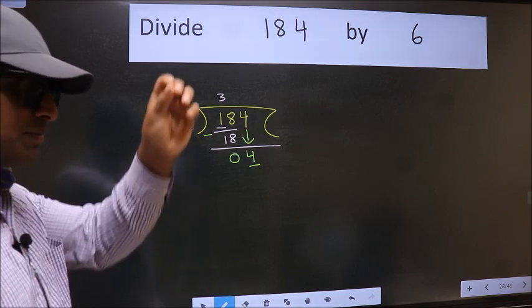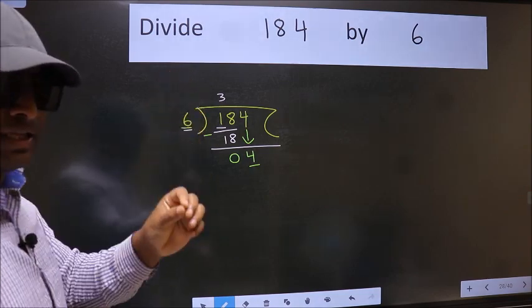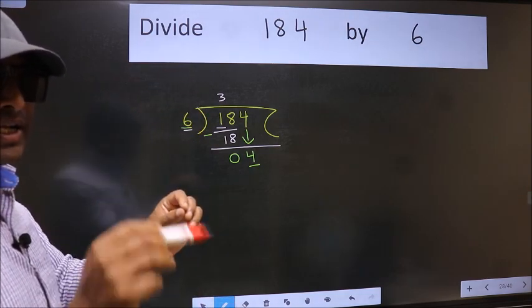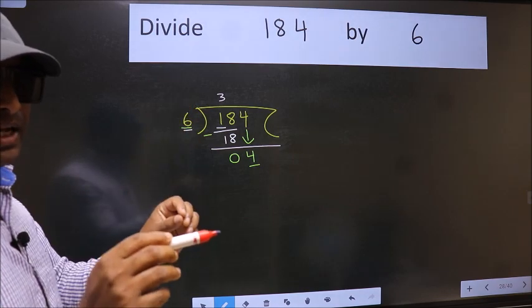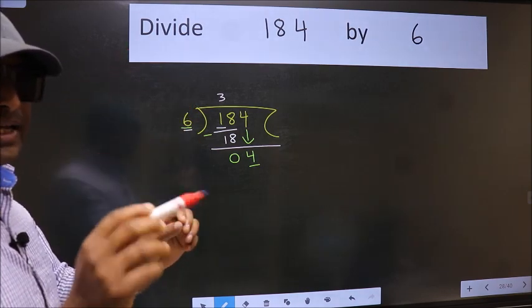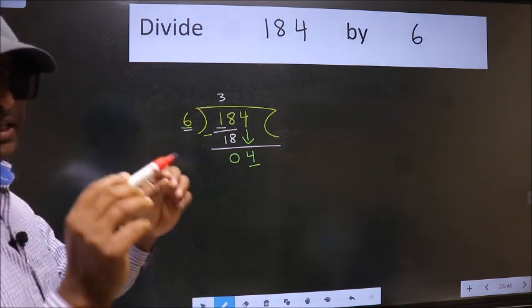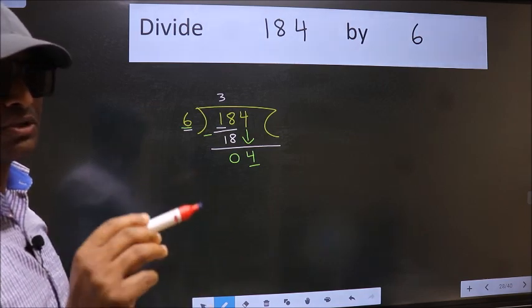I repeat. Bring down the number and also put dot, take 0 both at the same step, you should not do.